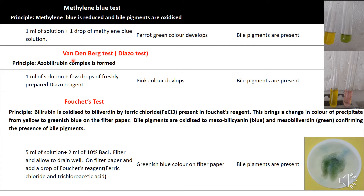The next test is Vandenberg's test, also known as the diazo test. The principle is that an azobilirubin complex is formed which is pinkish in color. We take 1 ml of bile and add a few drops of freshly prepared diazo reagent. A pink color is formed, confirming the presence of bile pigments.